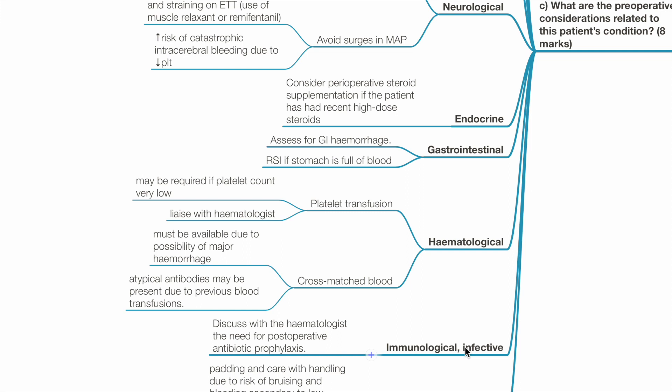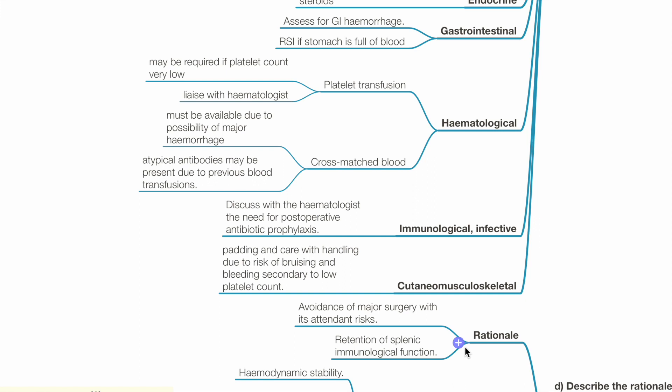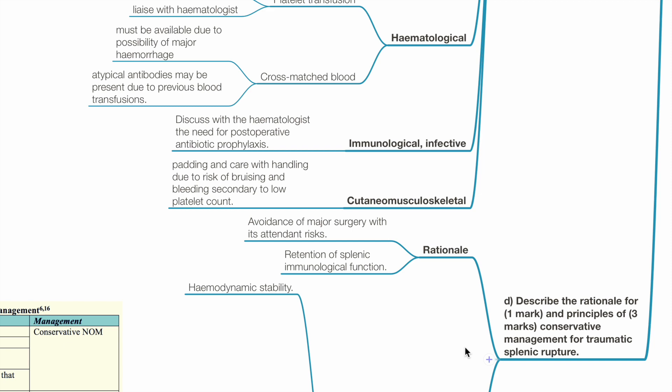Endocrine: Consider perioperative steroid supplementation if the patient has had recent high-dose steroid treatment. GI: Assess for GI hemorrhage; RSI if the stomach may be filled with blood. Hematology: Platelet transfusions may be required if platelet count is very low — liaise with the haematologist. Cross-matched blood must be available due to the possibility of major haemorrhage; atypical antibodies may be present due to previous blood transfusions. Immunology: Discuss with haematologists the need for post-operative antibiotic prophylaxis. Cutaneous/musculoskeletal: Padding and care with handling due to risk of bruising and bleeding from thrombocytopenia.